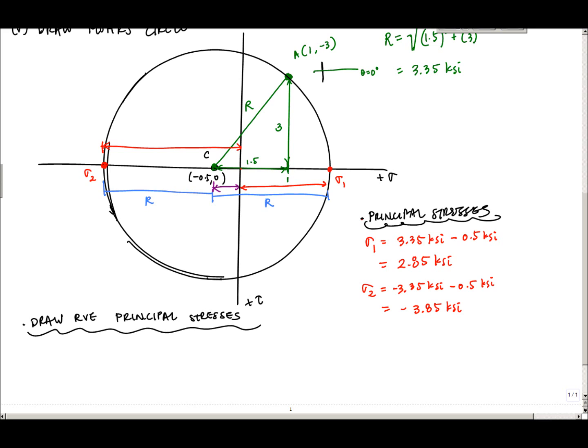So on this face right here, we had 1 KSI in tension and negative 3, or 3 KSI in shear going this way, this face. It represented this face. Now what we want to know is this is 3 KSI right here, 3 KSI shear stress, 1 KSI here.